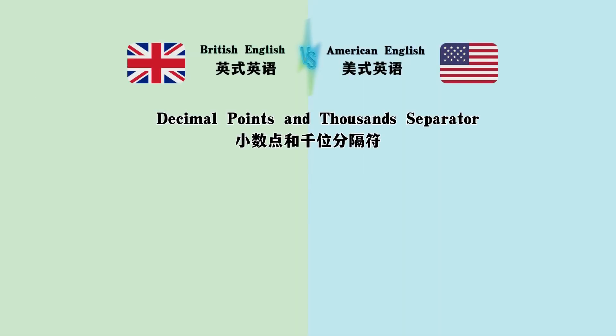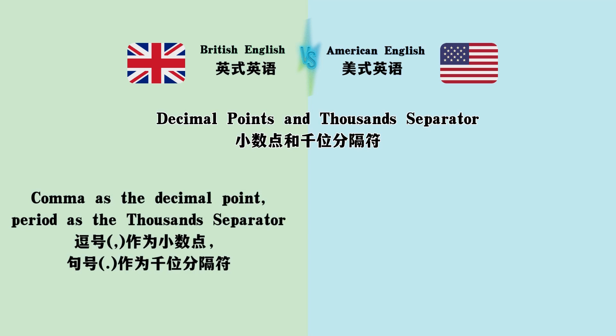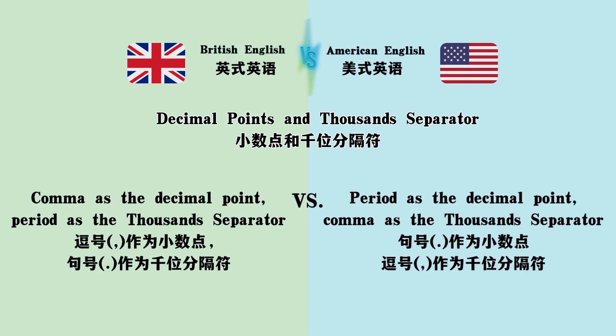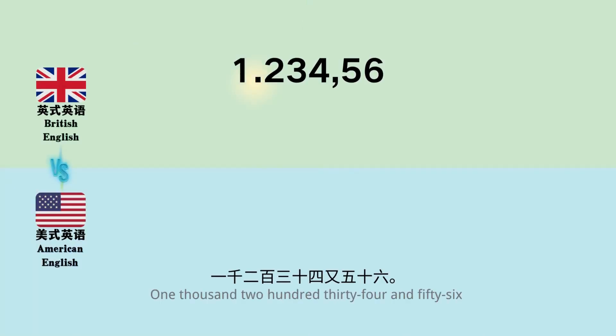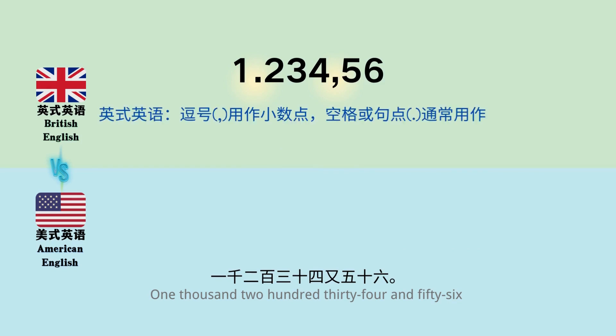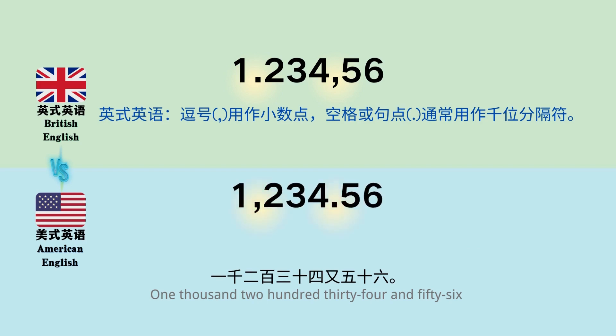Decimal points and thousands separators: comma as the decimal point and period as the thousands separator versus period as the decimal point and comma as the thousands separator. For example: '1.234,56' versus '1,234.56.'